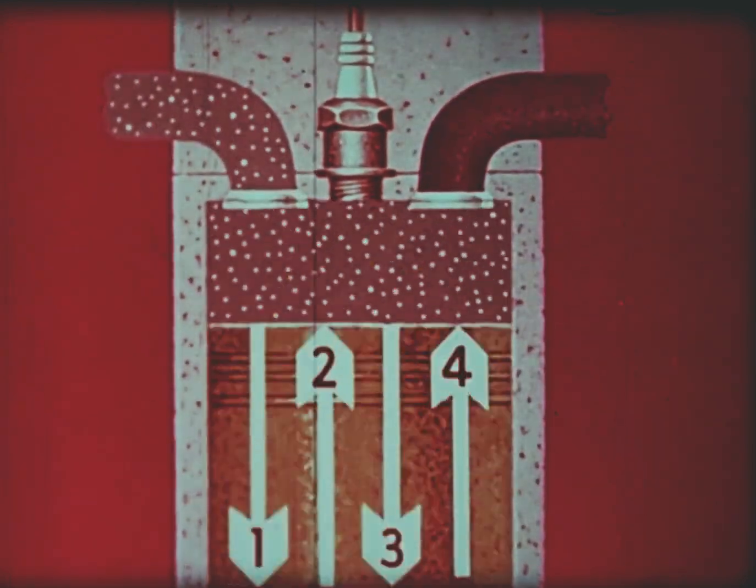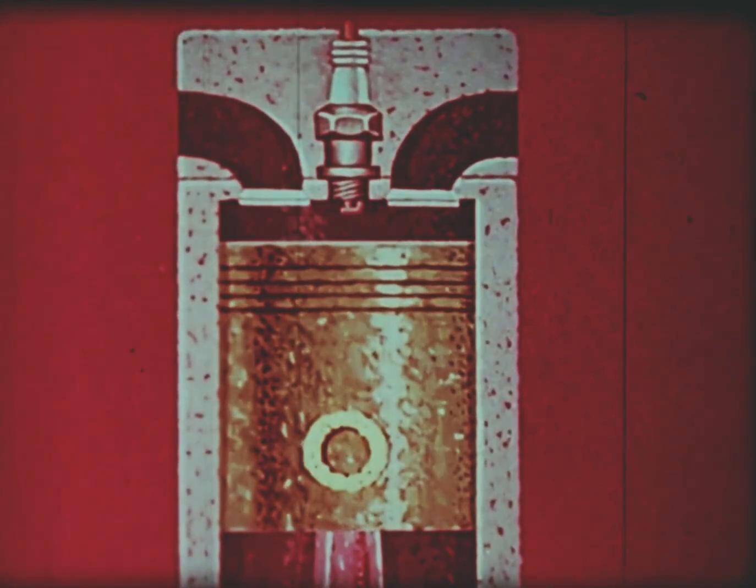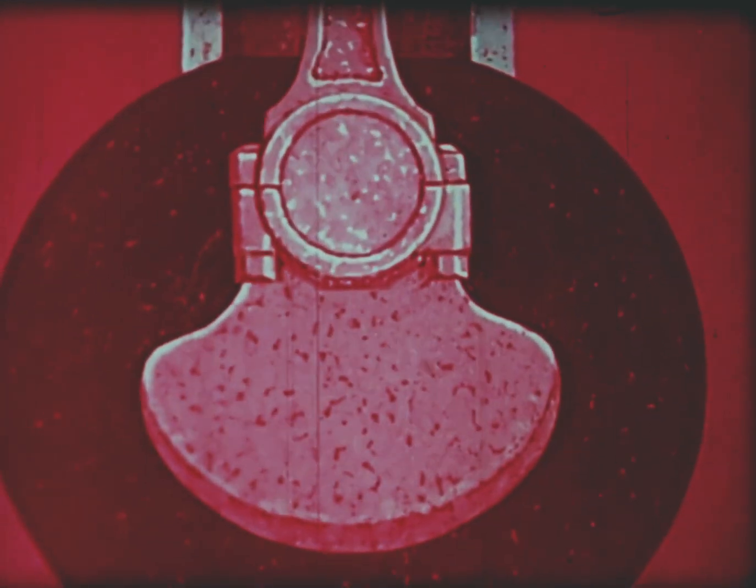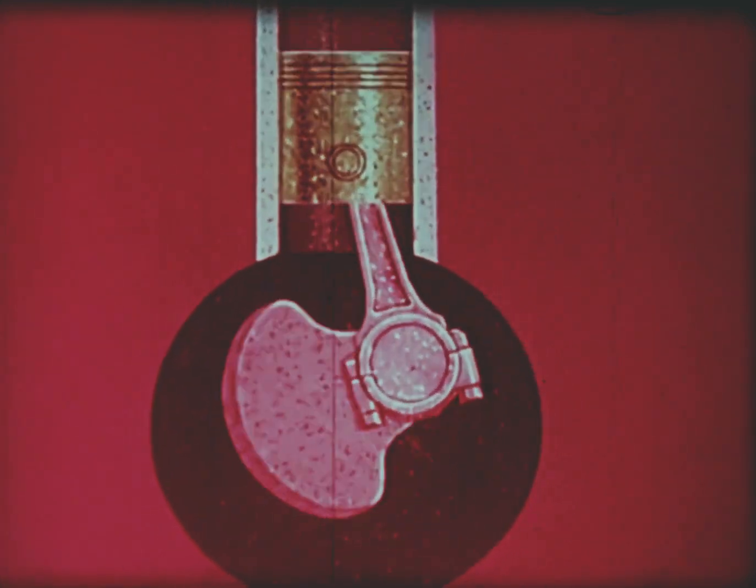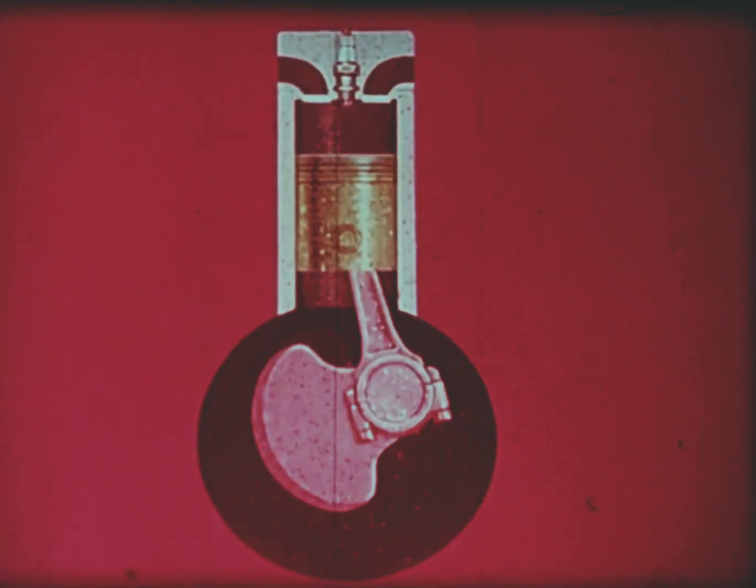Now to turn the wheels. Each of my pistons has a large pin that links with a connecting rod. Its lower end is connected to the crankshaft. As the piston moves up and down, the connecting rod causes the crankshaft to turn.